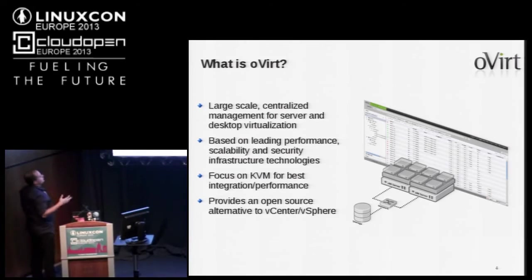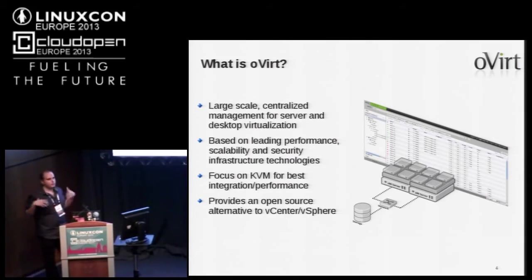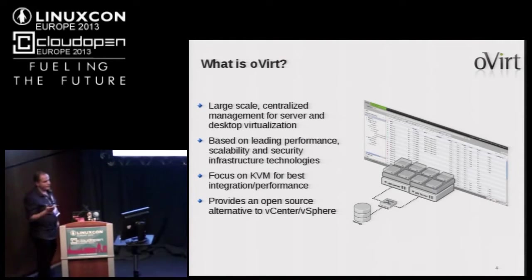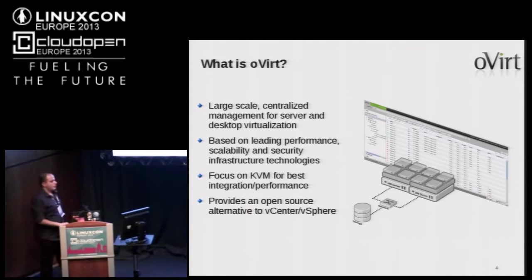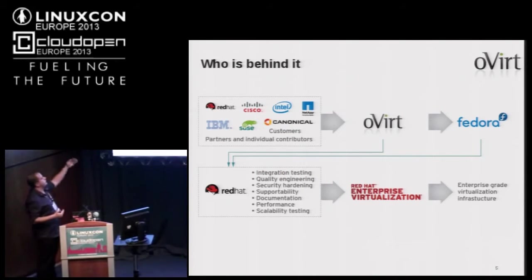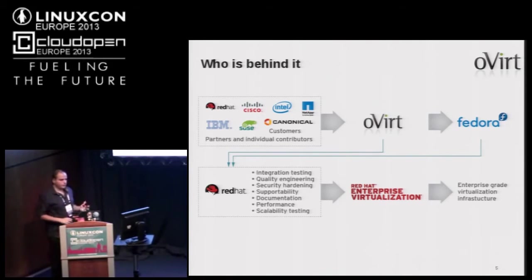oVirt is a large-scale centralized management environment for desktop and server virtualization. It gives you a way to manage your data center based on leading performance, scalability, and security technologies. It's based on KVM at its main backend and provides an open source alternative to vSphere or vCenter. It's a very powerful product with a large community and many companies contributing to the project. We have a Fedora release, and we also release Red Hat Enterprise Virtualization as a product.